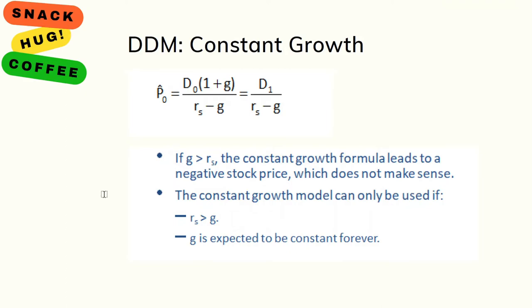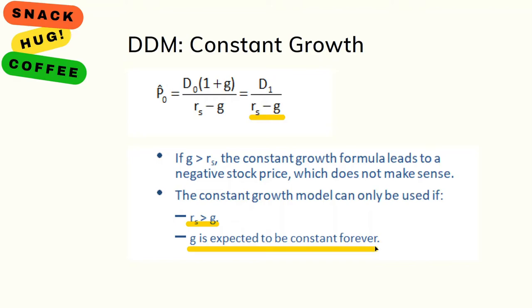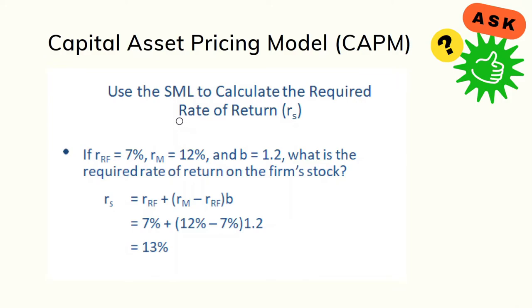Based on the constant growth model, there are two additional conditions to be aware of. First, the rate of returns must be greater than g — r must be greater than g — otherwise we will have a negative stock price. Second, we assume that the growth rate of the stock will grow at the rate equal to g and that it is constant forever, going into infinity.